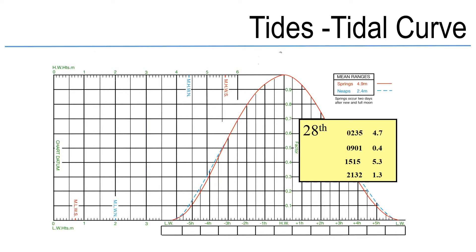So I've extracted the 28th and I've taken the tide details for this day. We can see the first high water is 02:35 at 4.7 metres, followed by low water at 09:01 at 0.4 metres, the following high 15:15 at 5.3 metres, and the second low of the day 21:32 at 1.3 metres.